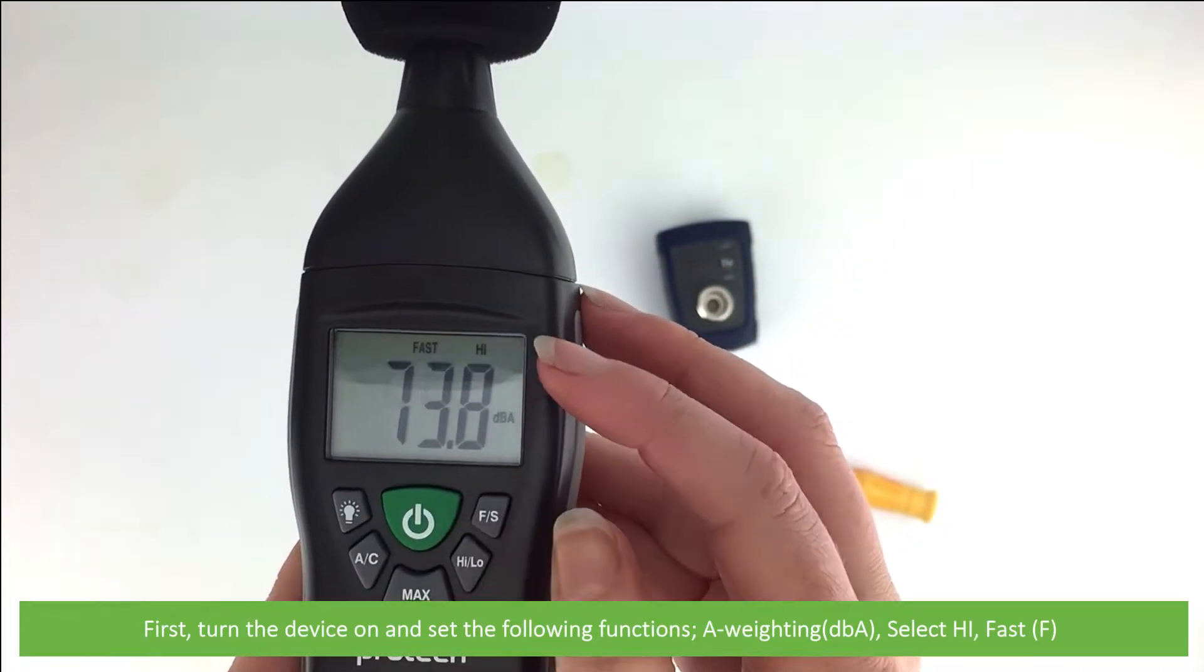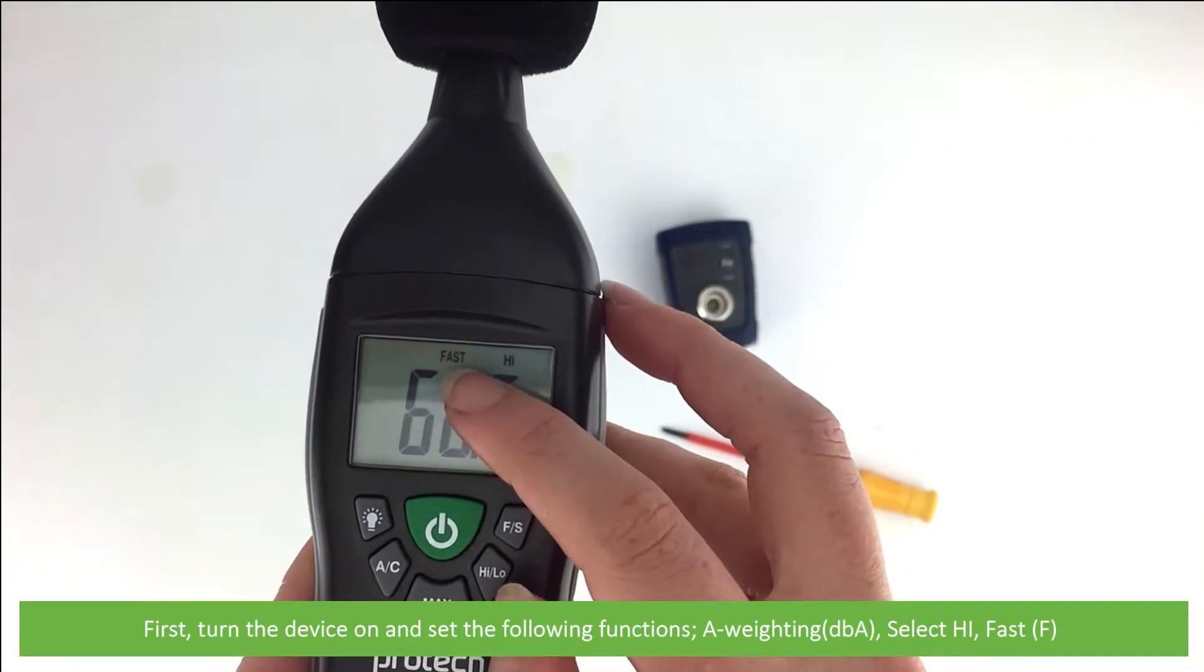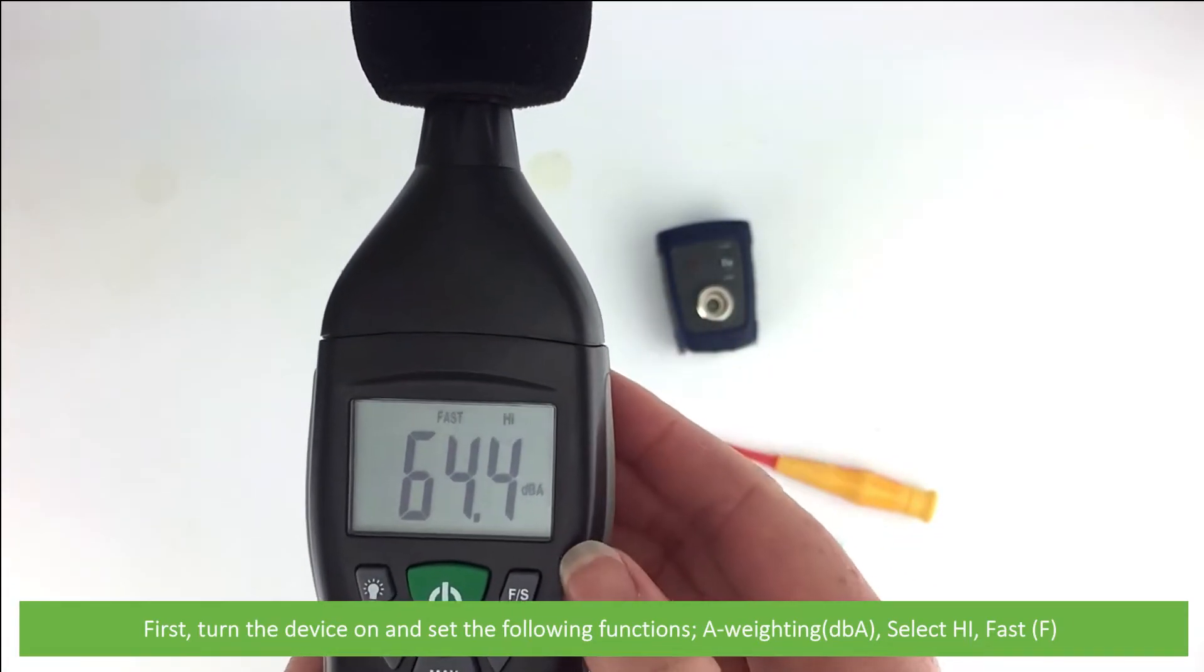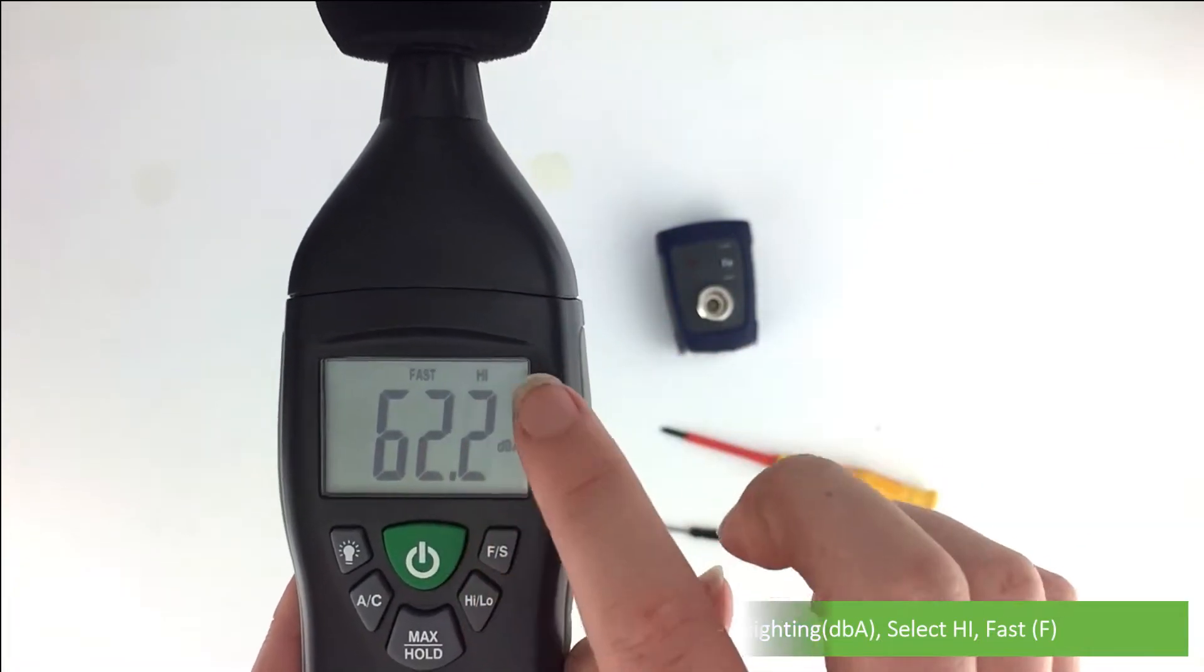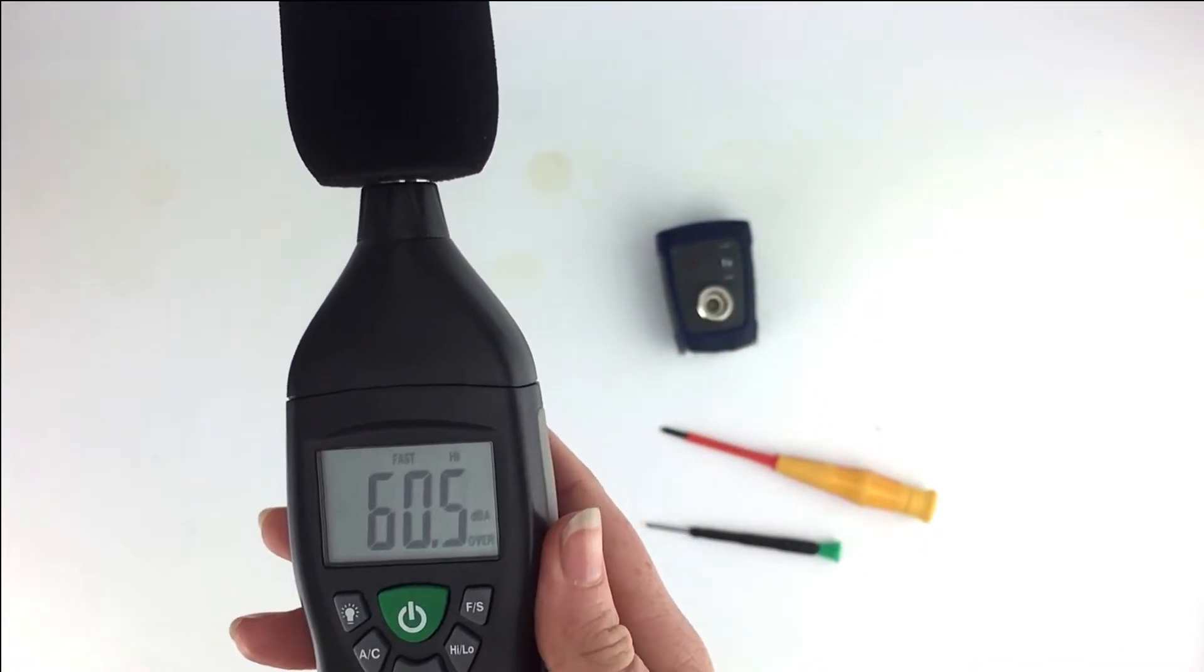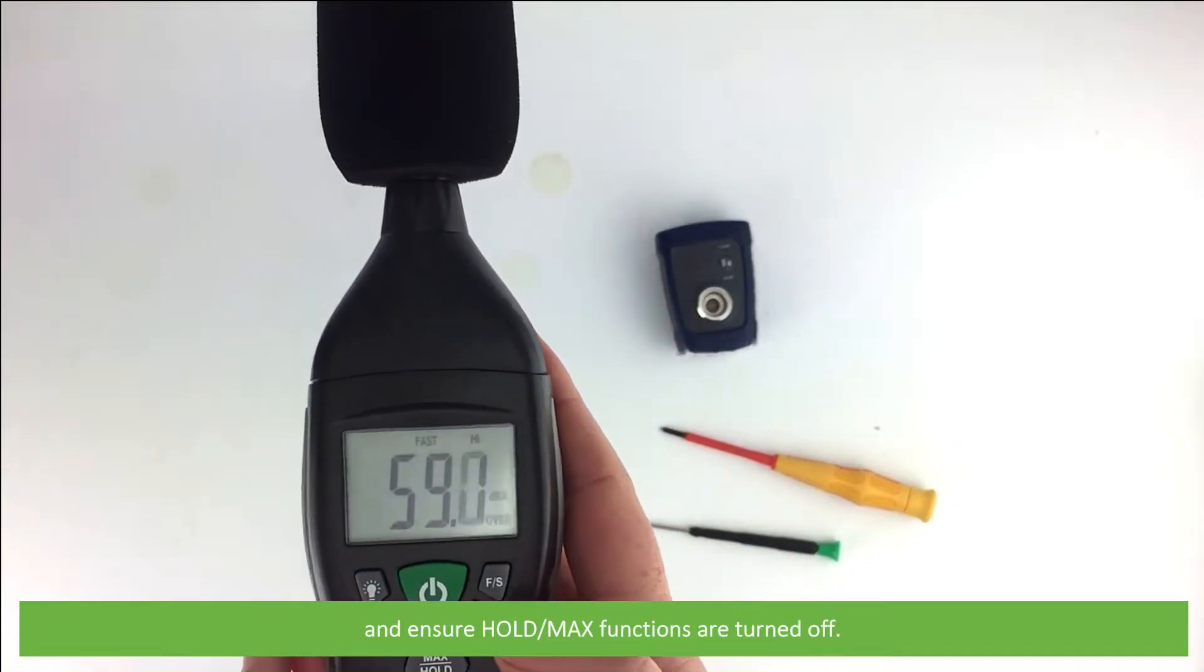Select high for high level measurements, fast this is F, and ensure hold and the maximum functions are turned off.